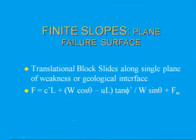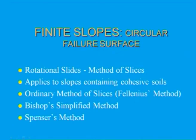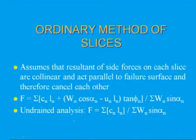Coming back to finite slopes, we discussed the planar failure surface, where it occurs, and block slides. For finite slopes with circular failure surfaces, we covered rotational slides, method of slices for cohesive soils, the ordinary method of slices, the simplified method, and Spencer's method.